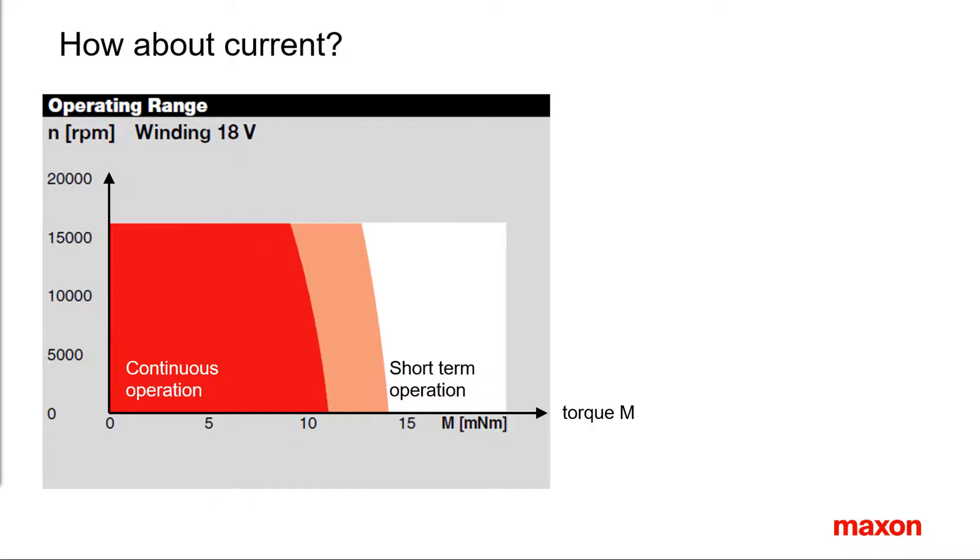How does current come into play? In reality, it's the motor current and not the torque that heats up the winding. However, torque and current are related. The relation being very simple: there is a strict proportionality between the two, with the torque constant Km as the proportionality factor.